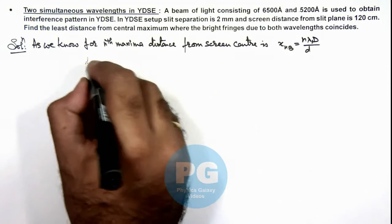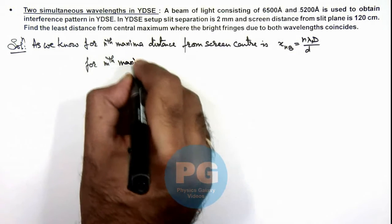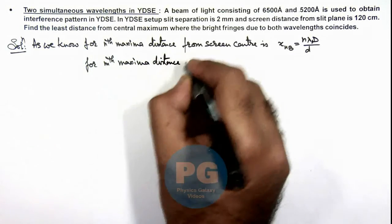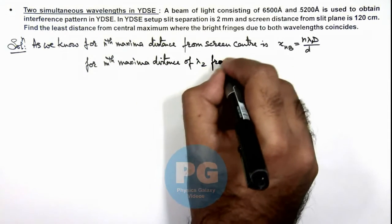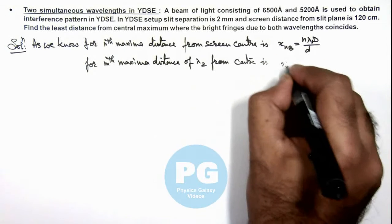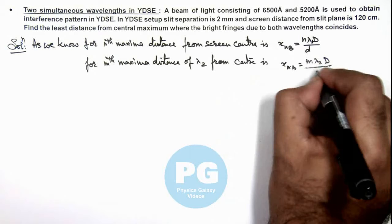Similarly for mth maxima distance of lambda 2 wavelength from center is x_m b, we can write this as m lambda 2 D by small d.